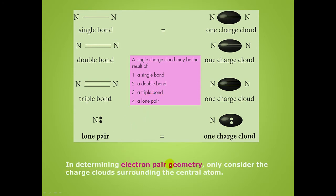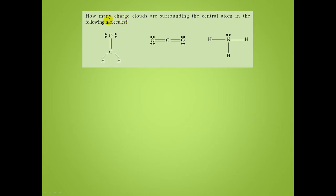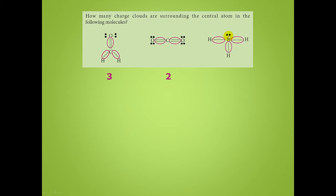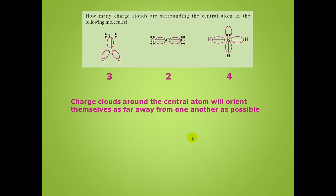When we determine electron pair geometry, we only consider the charge clouds that surround the central atom. How many charge clouds are surrounding the central atom in the following molecules? Here we have one, two, three — so there are three charge clouds. For this one, we're only looking at the central atom: one, two charge clouds. And about the nitrogen: one, two, three. Remember, a lone pair is also considered a charge cloud. Charge clouds around the central atom will orient themselves as far away from one another as possible, and that's what gives rise to the different molecular shapes.